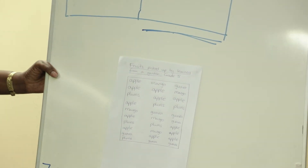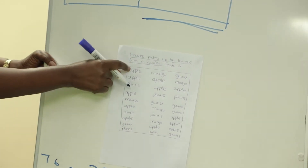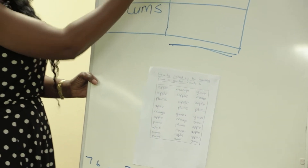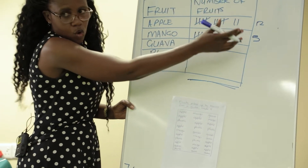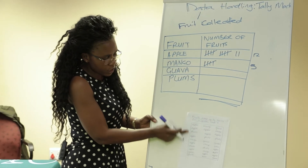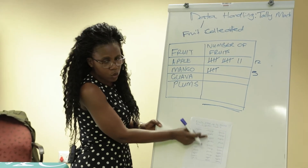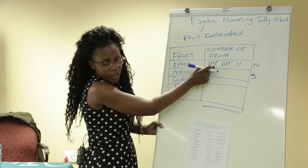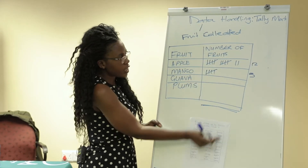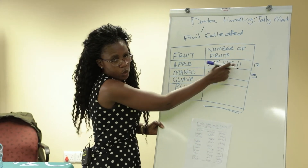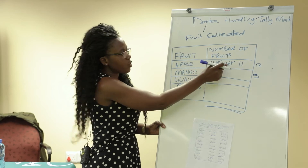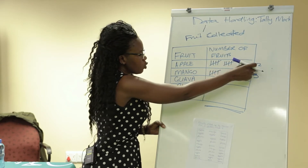So when you are using the tally system, you count the similar fruits in a group of five and you record. For example, when you count the apples in this case, you realize that we have our first five, continue counting our next five, and an extra two. When you are counting, you are saying five plus five plus two, giving us twelve.